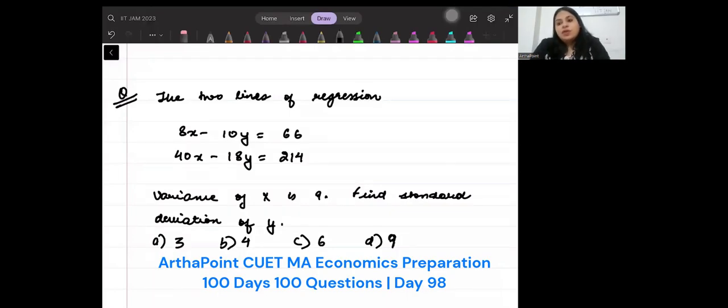Hello, good evening everyone. Welcome to question of the day. Today we are given this question based on regression line. It says the two regression lines are given to you and it also says that you are given the variance of the series X. It is asking you what is going to be the standard deviation of Y. This is what your question is asking.